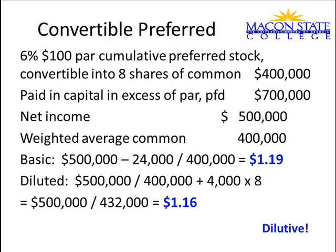For basic earnings per share, you remove the convertible preferred stock dividends because they're cumulative — you don't need to know if they're declared. That's 6% times $100 equals $6 per share, times 4,000 shares equals $24,000 removed from the numerator. Basic earnings per share is $1.19. For diluted, nothing happens to the numerator except you stop removing the preferred dividends. In the denominator, each of those 4,000 preferred shares converts into 8 common shares, adding 32,000 shares to the denominator, giving $1.16. It is dilutive because earnings per share went down.